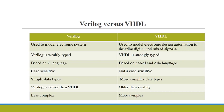Verilog is weakly typed, whereas VHDL is strongly typed. Verilog is based on the C language, whereas VHDL is based on Pascal and Ada language. Verilog is case sensitive whereas VHDL is not case sensitive. Verilog uses simple data types and VHDL uses more complex data types. Verilog is a newer version whereas VHDL is an older version. Verilog is less complex whereas VHDL is more complex.